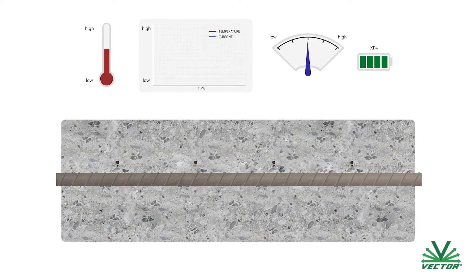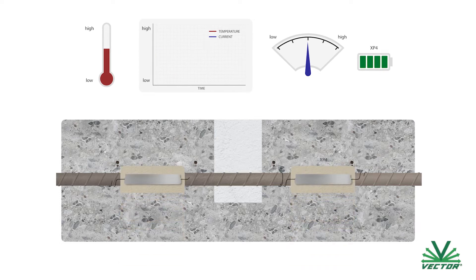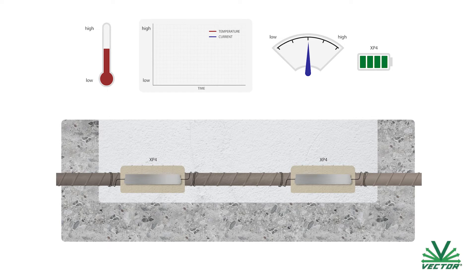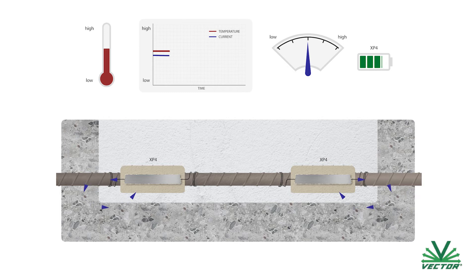Below is a galvanic anode installed in a concrete repair. At an operating temperature of 10 to 15 degrees Celsius, or 50 to 60 degrees Fahrenheit, it will discharge at a nominal rate. As we increase the temperature of the environment by 10 degrees Celsius or 18 degrees Fahrenheit,